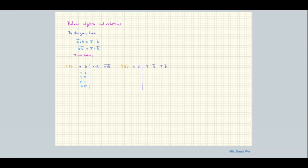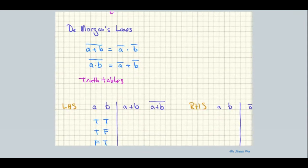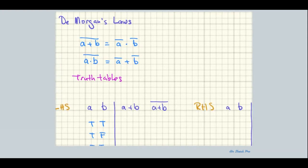Welcome everybody back to discrete math. Today we're going to be talking about Boolean algebra. It's named after a guy named George Boole, a 19th century mathematician who was working with logic games — kind of parlor games at the time — not knowing that what he was developing would be much more fully developed after him. We call it Boolean algebra, but Boole is actually responsible for maybe just the top 10% of it.